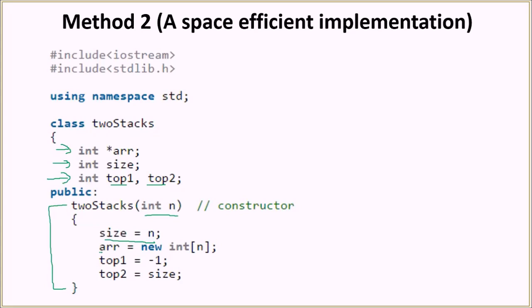Then we allocate the space of size n integers to the array. This array has the space of n integers. Then we initialize top1 to -1 and top2 to the size. Because the last element will have the index size-1, that's why we are initializing the top2 value to be size and not size-1.